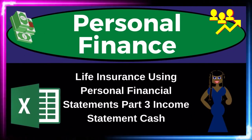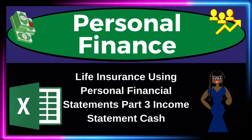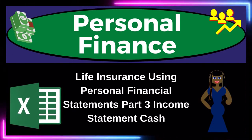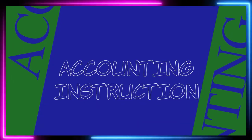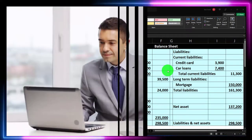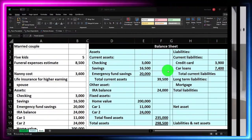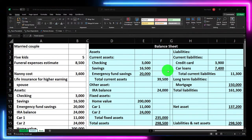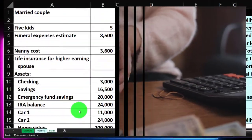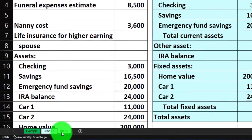This is a personal finance practice problem using Excel — life insurance using personal financial statements, part three: income statement on a cash basis. We're in our Excel worksheet, and if you don't have access to it that's okay, because we've been building this from a blank sheet starting in prior presentations. We built a balance sheet and an income statement on an accrual method, and now we're continuing with the income statement on a cash method. There are three tabs below: example, practice, and blank.